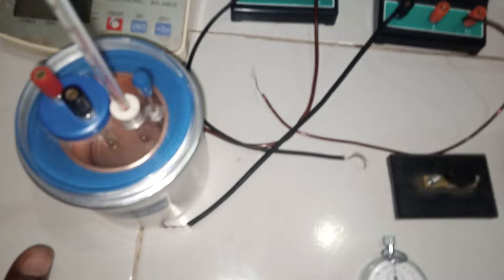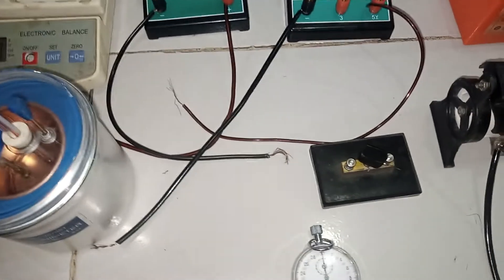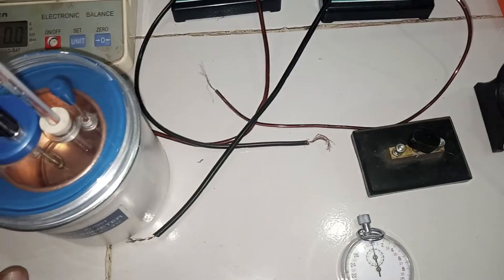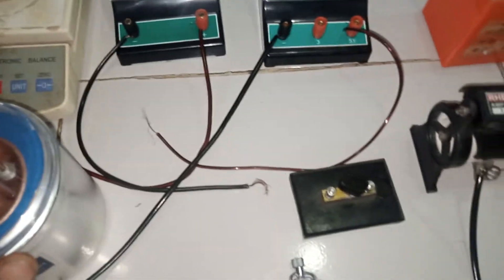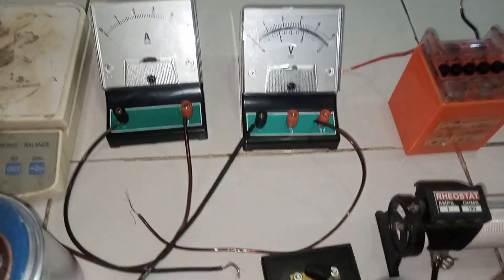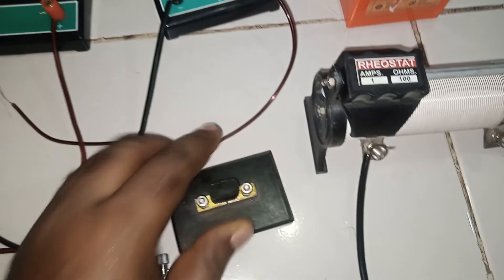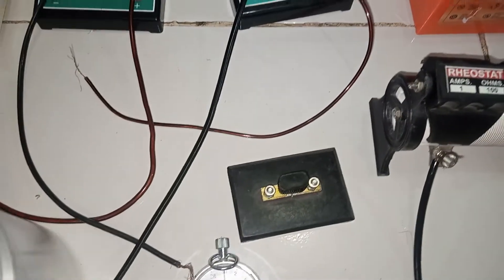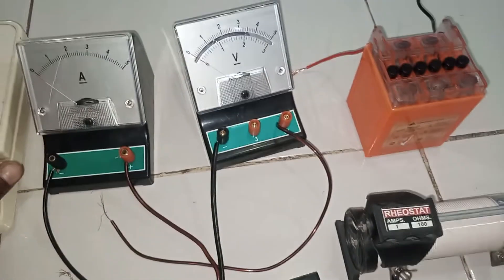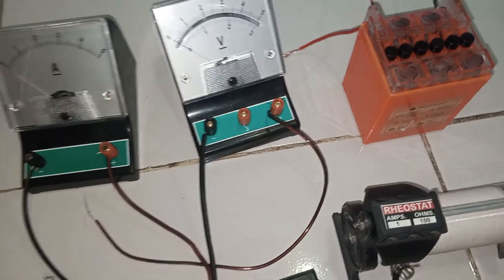Now that we have measured the mass of water and the initial temperature, we are going to now proceed to connect the experiment the way you are seeing it in the diagram. Check the diagram there, whatever you have there is the way we are going to connect this, and then once that is done we will now take our reading.